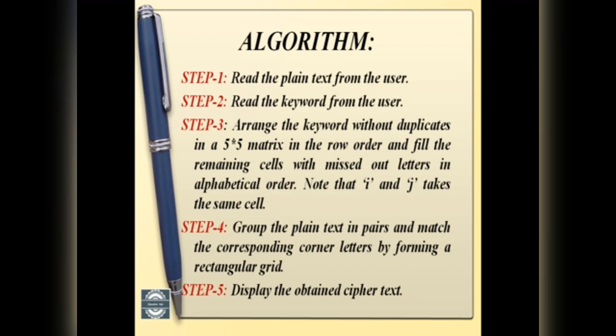The algorithm is: read the text from the user, read the keyword from the user, arrange a 5 by 5 matrix in order, place I and J in the same cell, group the plain text into two letter order, then follow the rectangular grid rules, and display the encrypted cipher text.